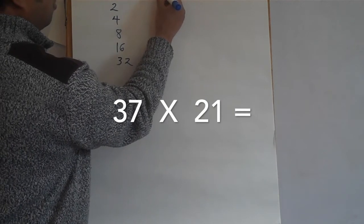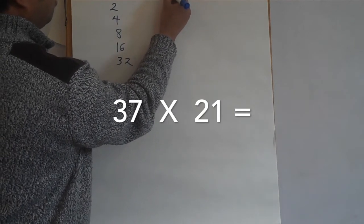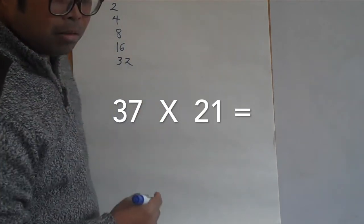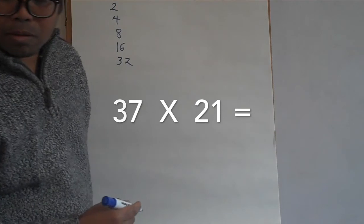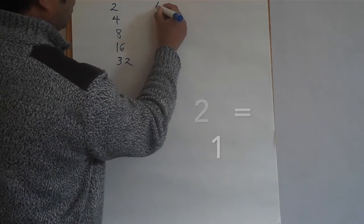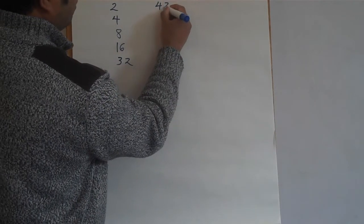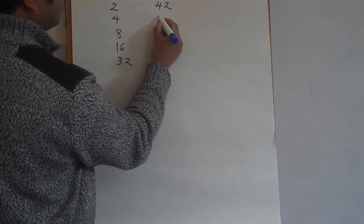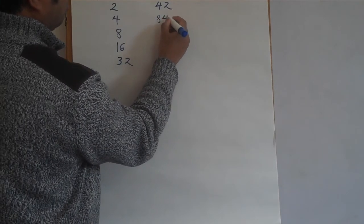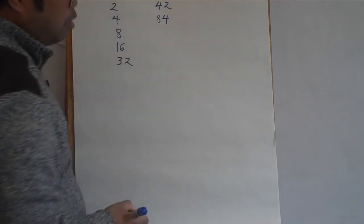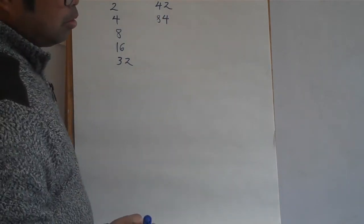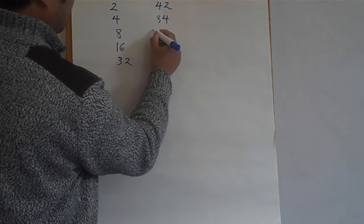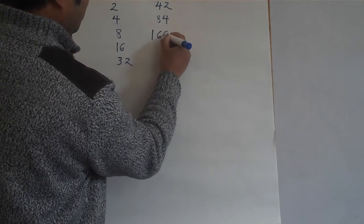What is double twenty-one? Forty-two. What is double forty-two? Eighty-four. What is double eighty-four? One hundred and sixty-eight.